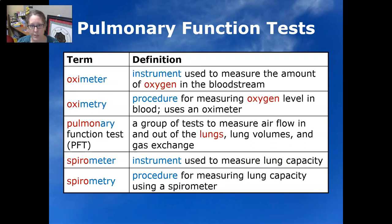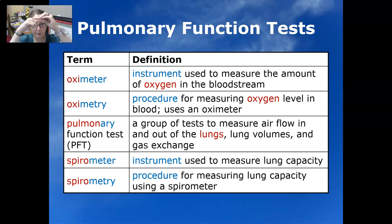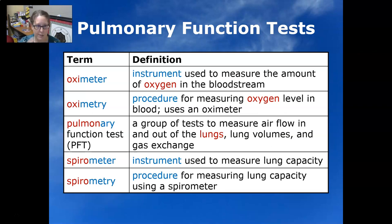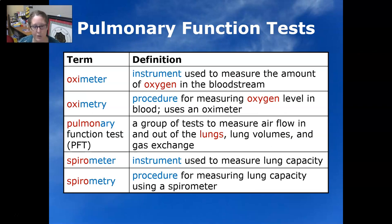Let's look at some pulmonary function tests. An oximeter is an instrument used to measure the amount of oxygen in the bloodstream — it's usually placed on the finger and just gets a reading. Oximetry is the procedure of measuring oxygen level in the blood using an oximeter. It uses red light to look at the oxygen in the capillaries and measure the oxygen percent concentration.